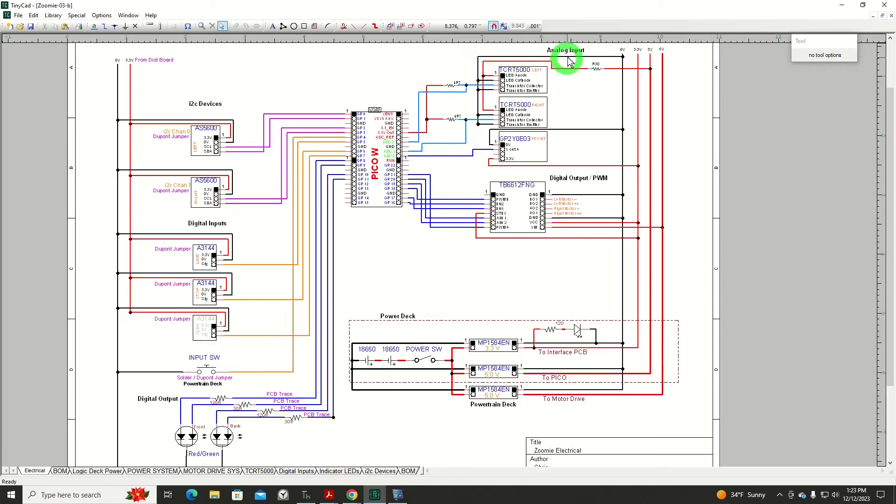We've got our analog inputs coming from the two photo-reflective sensors, which are TCRT5000s, one for left, one for right, and a time-of-flight sensor, which is a Sharp product. It is a model number GP2Y0E03, and that's located on the front of the Zoomy.